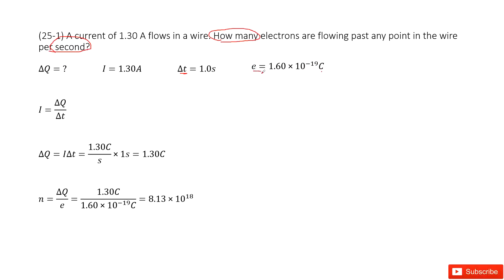If we know how much charge flows through the wire in a second, we can divide this charge by e to get the number of electrons.